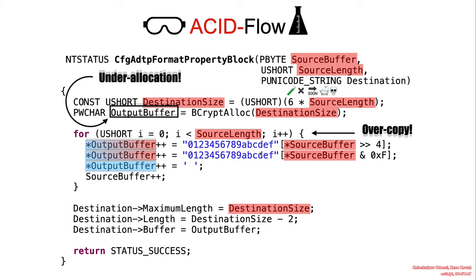The animation illustrates that some part of the output buffer will be corrupted with attacker-controlled input data, and some parts are fixed. The fixed part — shown in blue as zero to F — represents the original content, while the additional content of the source buffer will be attacker-controlled data.